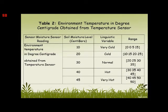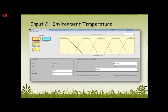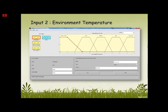This is Table 2, the second input: environment temperature in degrees centigrade, obtained from the temperature sensor. The sensor reading levels in centibar are 10, 20, 30, 40, and 45. The linguistic variables are very cool, cold, normal, hot, and very hot, with lengths defined in MATLAB. This is Input 2 — environment temperature in MATLAB — it has very cool, cold, normal, hot, and very hot, all in a trapezoidal graph.